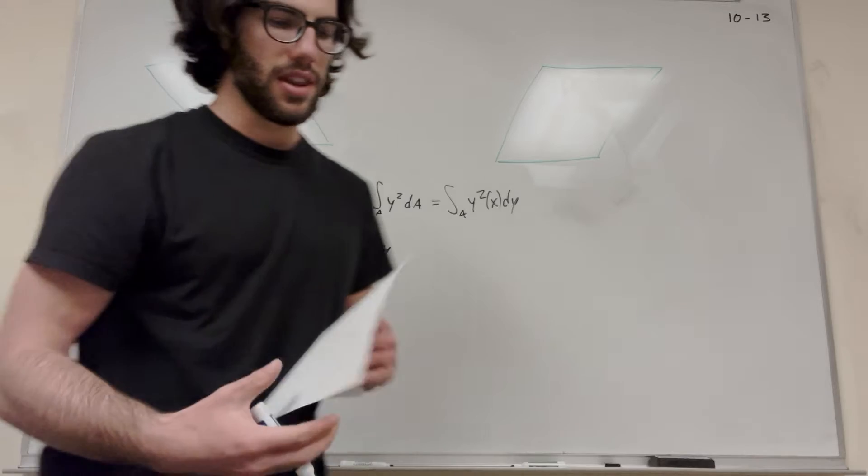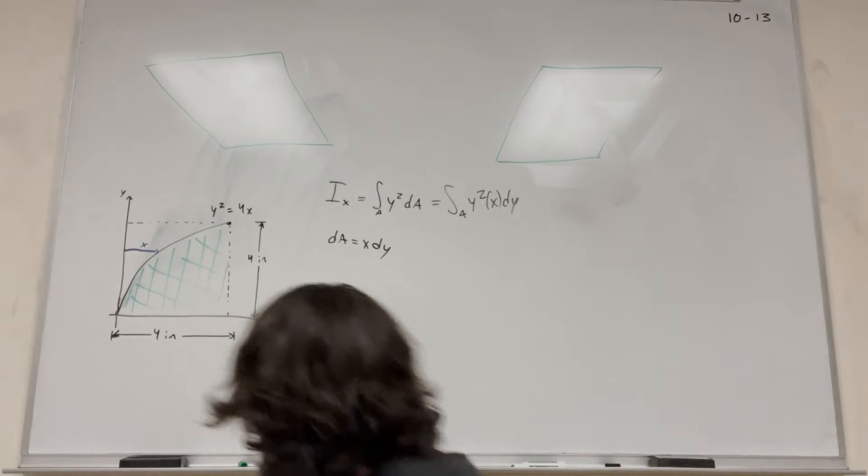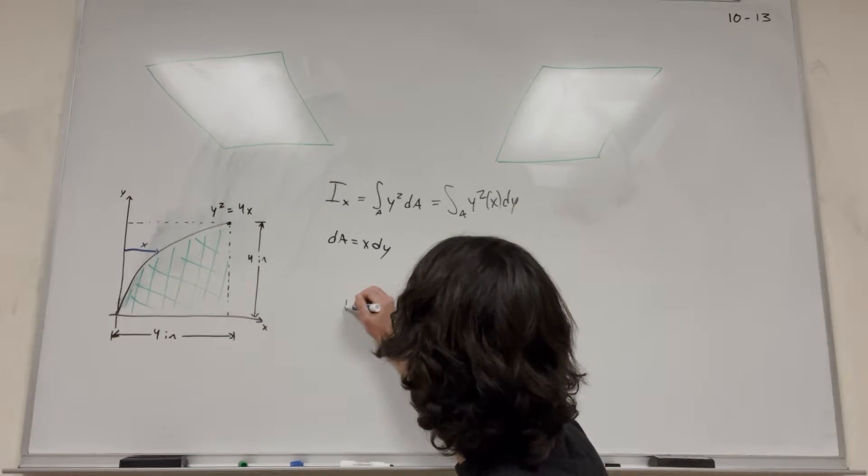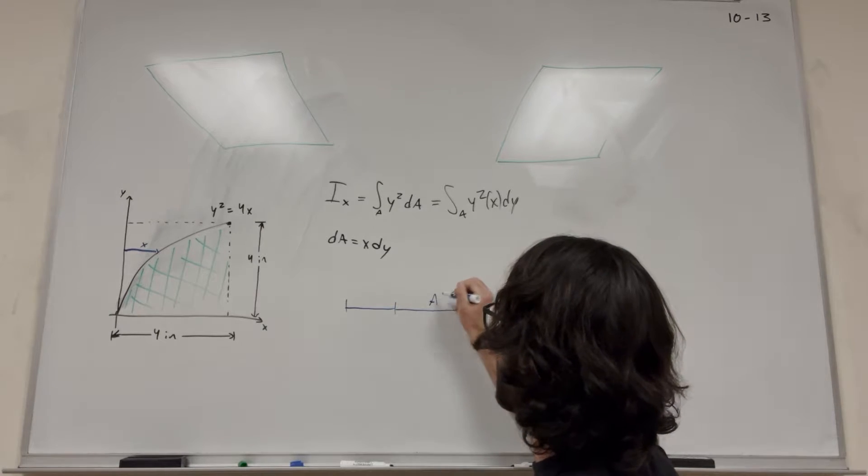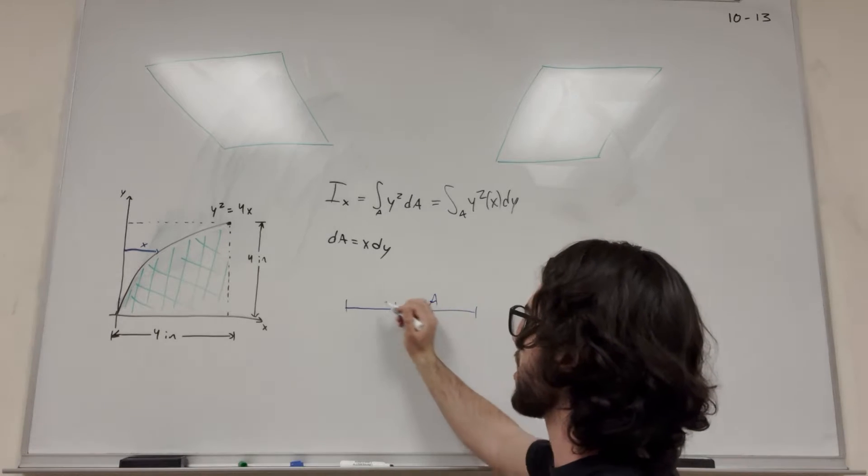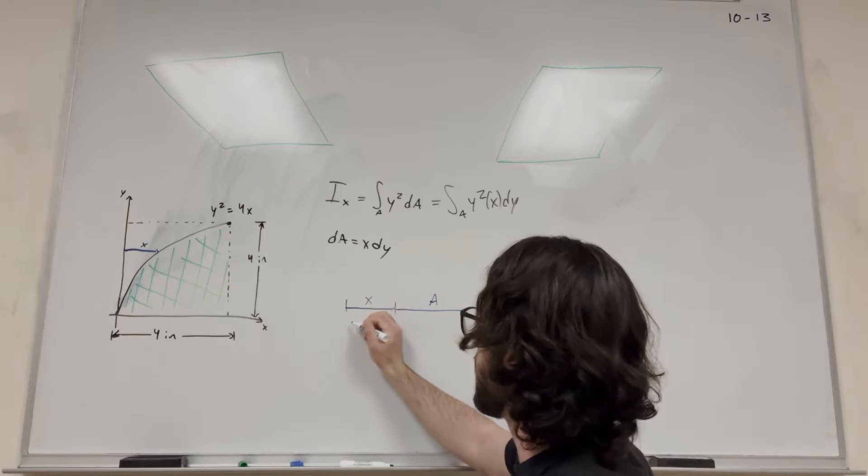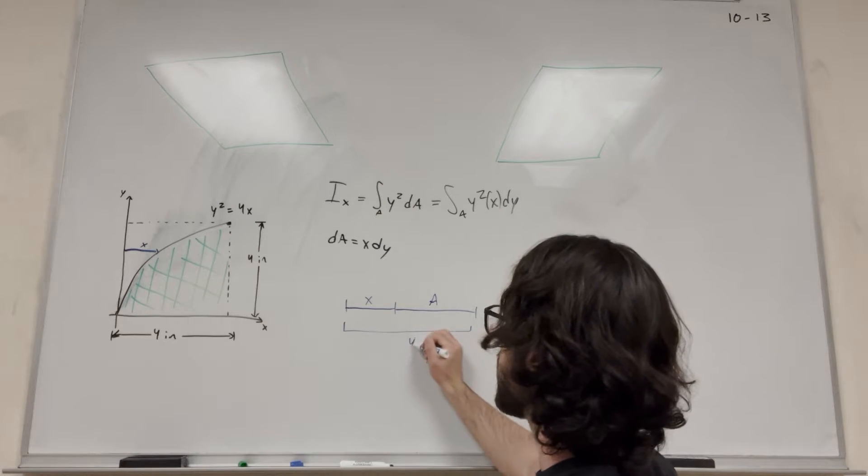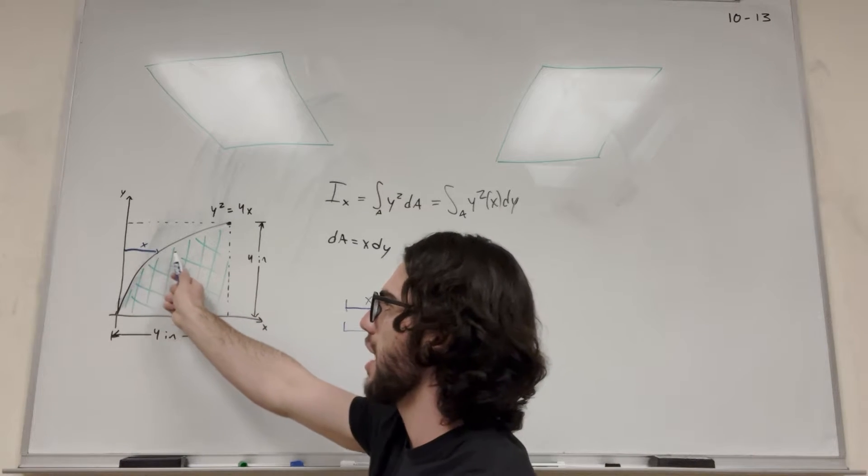If we're going to draw out what any point on this would look like, we have here and then here. So this is our area. This is the place we actually want to integrate, and then this is x. Now we know that this total distance is 4 inches, right?